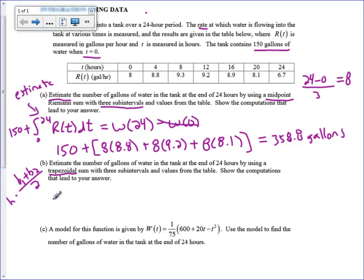So my estimate is going to be 150 plus. So we're going to use a trapezoid on this first interval from 0 to 8. And the way you do that is you do your width. My width is 8. But now we're going to average the bases. So we're going to do 8 plus 9.3. And we're going to divide that by 2. So that would be the first area of a trapezoid. And that's the average of the left and the right endpoint.